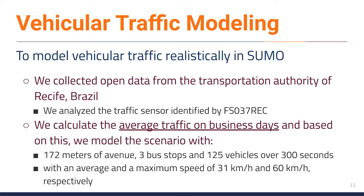To model vehicular traffic realistically in SUMO, we collected open data from the Transportation Authority of Recife, Brazil. The Transport Authority provides data such as the date, time, and speed of each car traveling the streets from auxiliary traffic sensors. We calculated the average traffic on business days and, based on this, modeled the scenario with 172 meters of avenue, 3 bus stops, and 125 vehicles over 300 seconds with an average speed of 31 km/h and a maximum speed of 60 km/h. Finally, we performed 31 simulations of this modeling to import the flow generated in each instance into the network simulations and calculate the statistical tests.